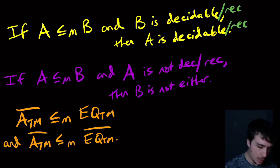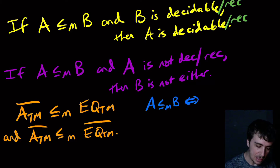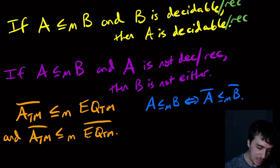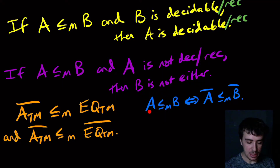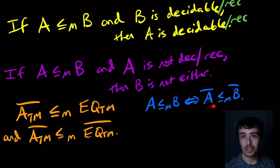We'll use an interesting fact: if A mapping reduces to B, this is exactly the same as saying A complement mapping reduces to B complement. The reason is that the condition states W is in A if and only if F(W) is in B — so if the input is not in A, the corresponding F(W) is not in B. You can use the exact same function.